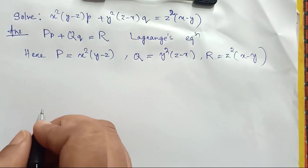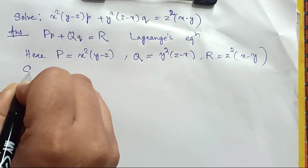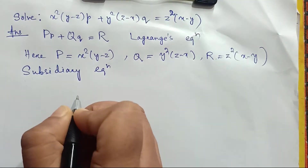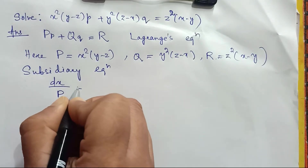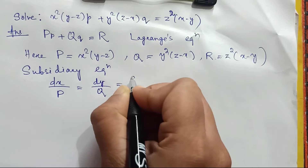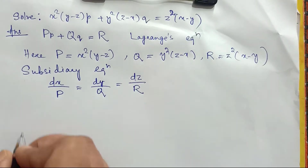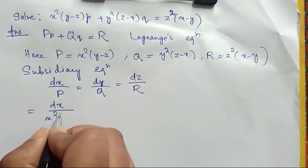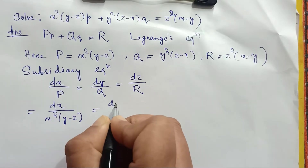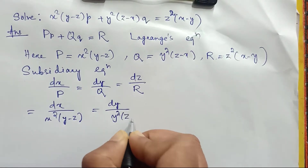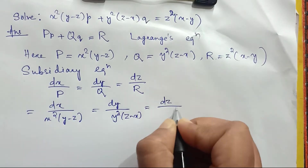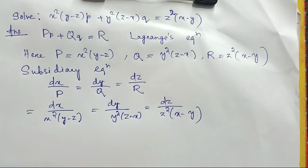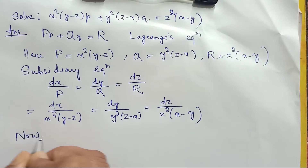We can write the subsidiary equation: dx/P = dy/Q = dz/R, which equals dx / [x²(y-z)] = dy / [y²(z-x)] = dz / [z²(x-y)].